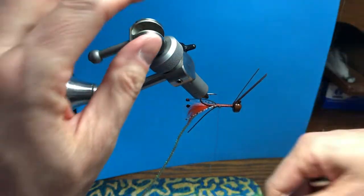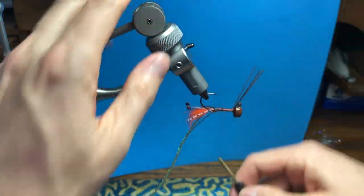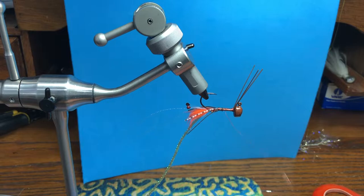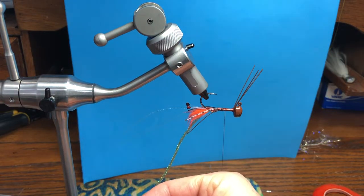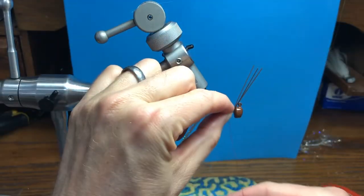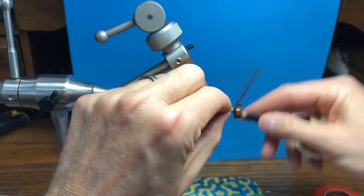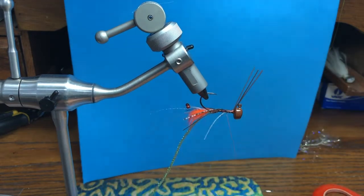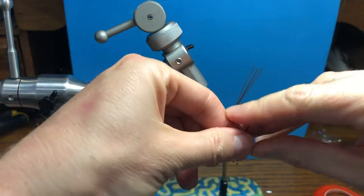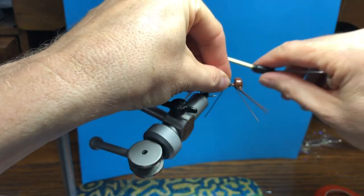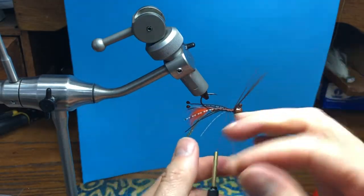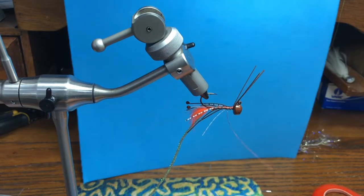Go about halfway between that leg and the head and tie in the other two sets of legs. One set on this side, double it. Then tie the other set on the opposite side. Bring the thread all the way to the end.